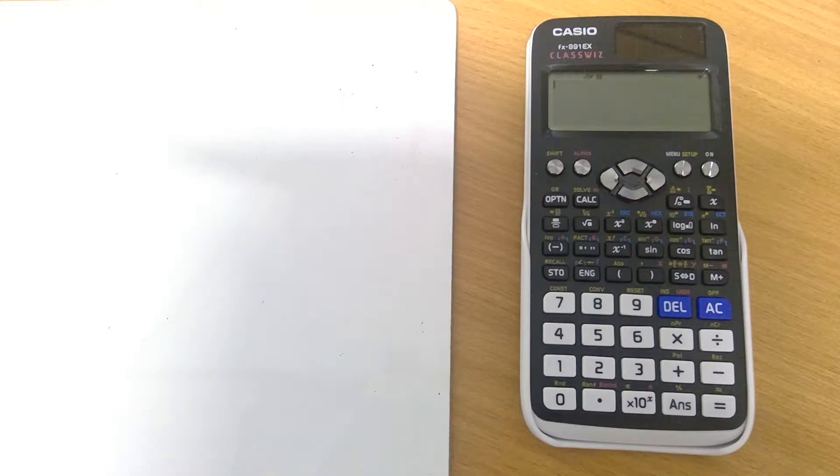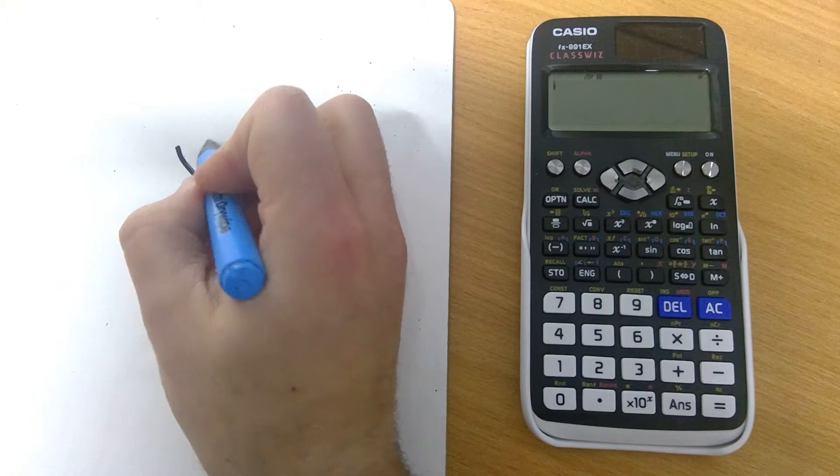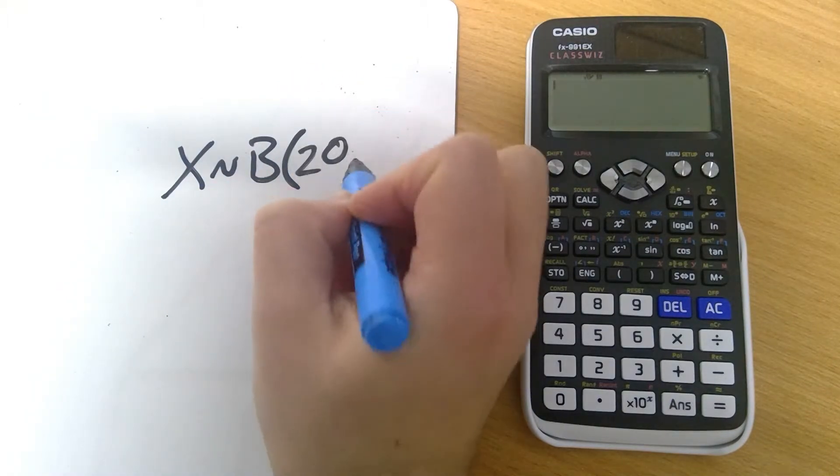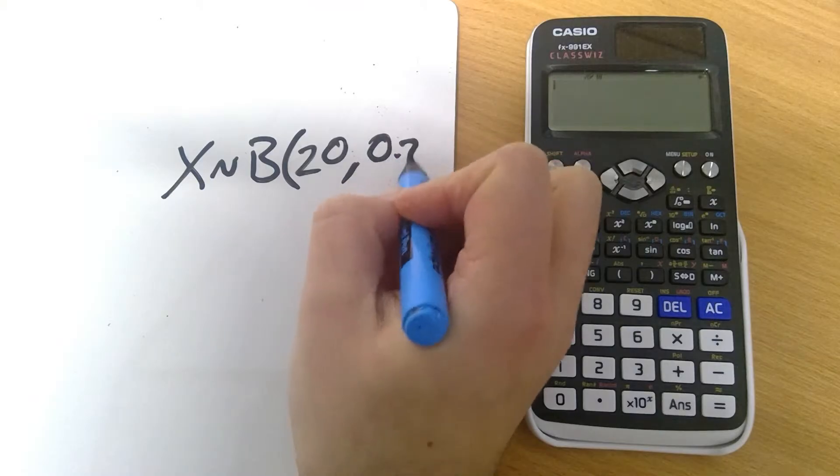This video will show you how you can use your Casio ClassWiz, the FX991EX, to calculate binomial probabilities either as individual values or as a cumulative distribution table. For each of these questions I'm going to use X behaving binomially with N being 20 and P being 0.2.